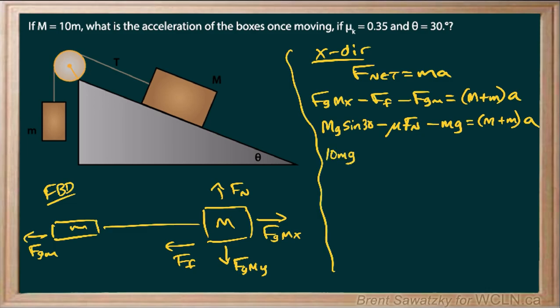10 Mg sine 30 minus Mu, and Fn replaced with the Fg capital MY, and so we'll work that through, and 10M, so capital M replaced there, and then we have G cos 30, and then we have the minus Mg, and we're running a little out of room here, and we'll replace that capital M with 10 little m's, and so 10 little m's with one little m is 11MA.